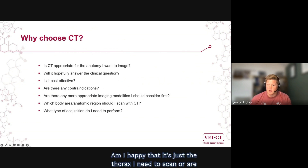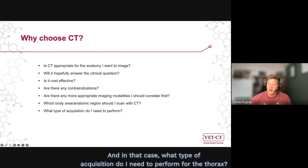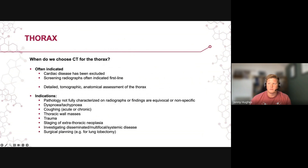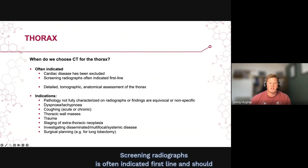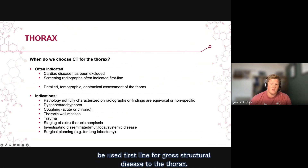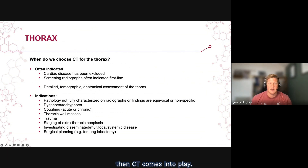Am I happy that it's just the thorax I need to scan, or are there other body areas or regions I need to consider? And what type of acquisition do I need to perform for the thorax? CT for the thorax is often indicated, but usually when cardiac disease has been excluded in relevant cases. Screening radiographs are often indicated first line and should be used first line for gross structural disease to the thorax. When we need detailed tomographic anatomical assessment of the thorax, then CT comes into play.